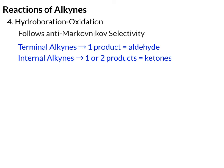If the internal alkyne is symmetric, meaning you have the same thing on both sides of the triple bond — say two ethyl groups — both sides are equivalent, so you'll end up with one product. If it's unsymmetric, you'll get two products. That would be something like a methyl and an ethyl — different things on each side of the alkyne.